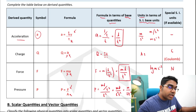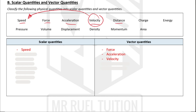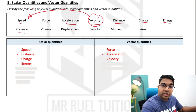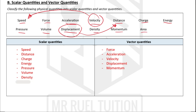Now let's classify physical quantities into scalar and vector. Speed is a scalar quantity — it has no direction. Force has direction, so it is a vector. Acceleration has direction — vector. Velocity has direction — vector, and it is the vector equivalent of speed. Distance has no direction — scalar. Charge — scalar. Energy has no direction — scalar. Pressure acts in all directions and therefore is scalar. Volume — scalar. Displacement is a vector quantity and is the vector equivalent of distance. Density has no direction — scalar. Momentum has direction — vector. Area has no direction — scalar.